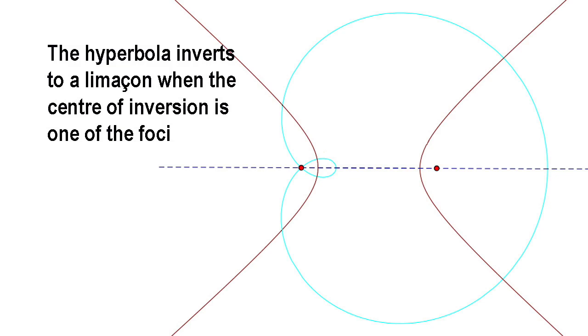In this last case, if the asymptotes of the hyperbola make an angle of pi over 3 with the axis which cuts the hyperbola, then it inverts to the trisectrix of Maclaurin.